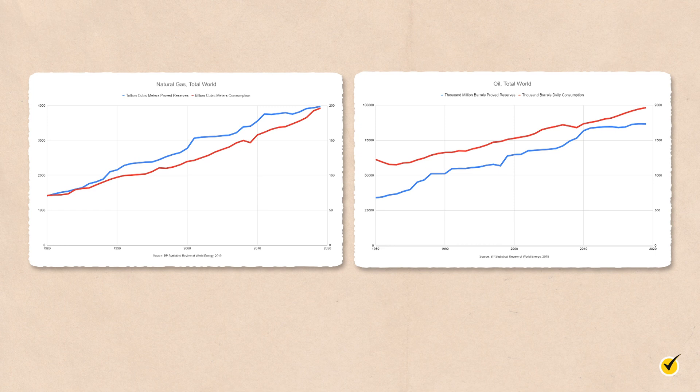Now let's switch gears and talk more about non-renewable resources. Fossil fuels are produced from the decomposition of organic matter like plants and animals. They're full of carbon and provide energy in the form of coal, petroleum, and natural gas. We use these fuels for cars and airplanes, and also to heat our homes and cook our food. These two graphs show the consumption of oil and natural gas globally over the past 40 years, along with the reserve amount for oil and gas. As you can see, consumption and reserves have both increased.